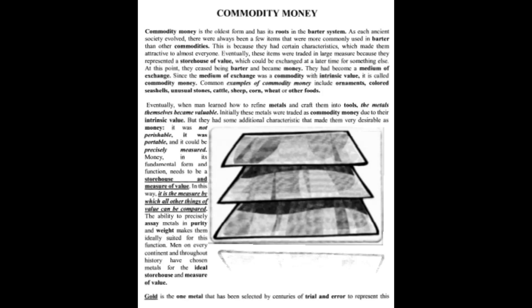Commodity money is the oldest form and has its roots in the barter system. As each ancient society evolved, there were always a few items more commonly used in barter than other commodities, because they had certain characteristics which made them attractive to almost everyone. Eventually these items were traded in large measure because they represented a storehouse of value which could be exchanged at a later time for something else. At that point they ceased being barter and became money — a medium of exchange. Since the medium of exchange was a commodity with intrinsic value, it is called commodity money. Common examples include ornaments, seashells, unusual stones, cattle, sheep, corn, wheat, and other foods.